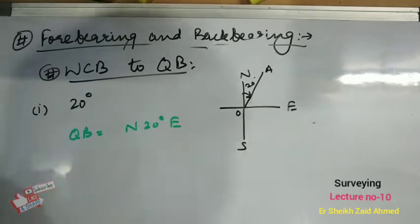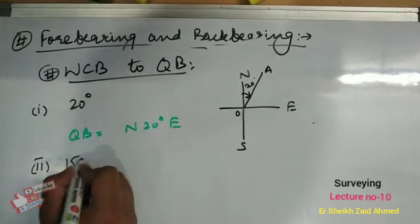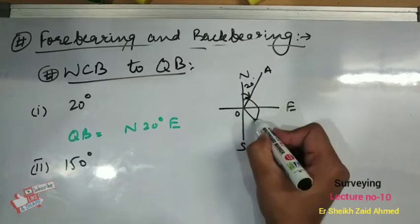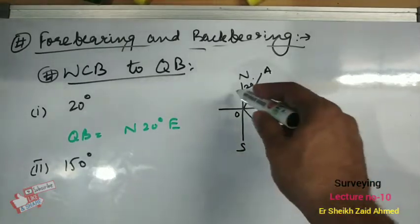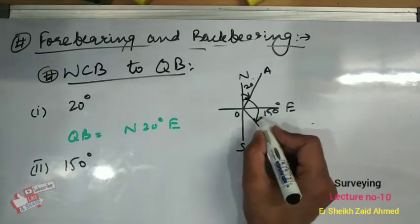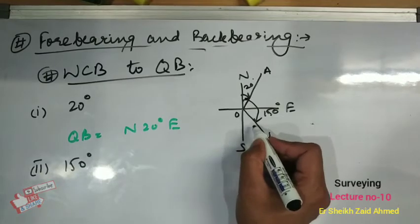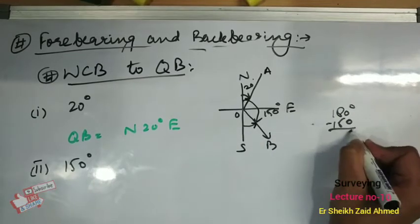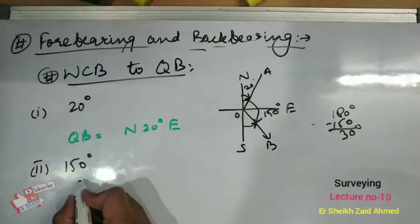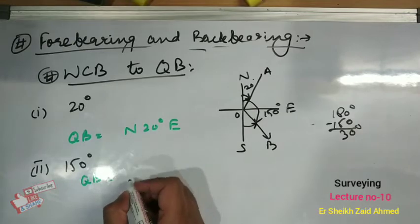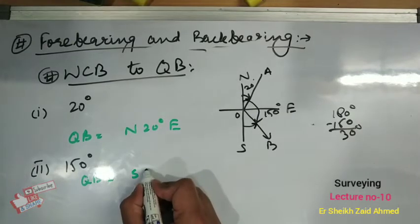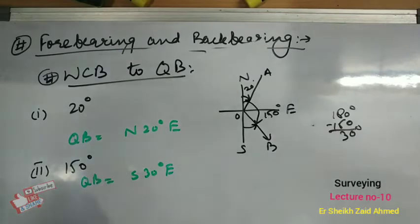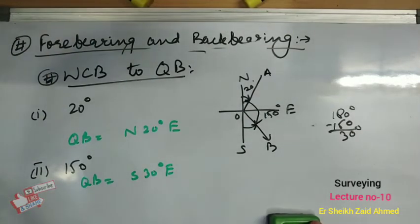The second part is 150 degrees in whole circle bearing. This lies in the second quadrant, where the nearest meridian end is south. So we calculate the angle from south: 180 − 150 = 30 degrees. Therefore in the quadrantal system, this bearing is South 30 degrees East. In this way we can convert whole circle bearing to quadrantal bearing.